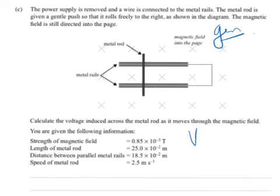The formula we use for the voltage induced is V equals BVL. V is the voltage induced, B is the strength of the magnetic field, V is the velocity or speed of the metal rail, and L is the length that we're considering.